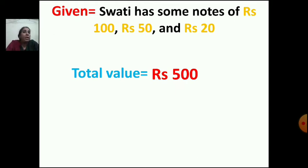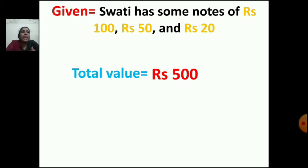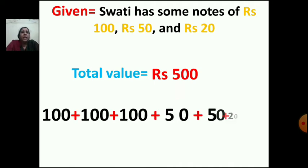Now we have to see which notes she has taken — how many 100 rupee notes, how many 50 rupee notes, and how many 20 rupee notes. We should take all three denominations and the total of these notes should make rupees 500. Now we have to decide which notes to take.